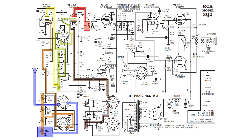It gets sent over to our first IF, which is another tuned tank circuit. That 455 signal will pass through very easily, and it goes to the grid of the next tube, gets amplified, and sent over to two more tank circuits, where the next step is it's going to get detected.